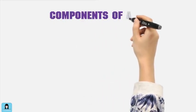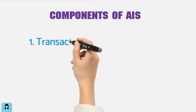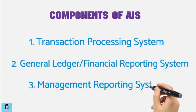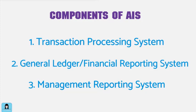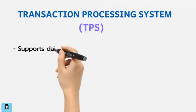Whether it is a manual or a computer-based system, the AIS is composed of three major components or subsystems: the Transaction Processing System (TPS), the General Ledger Financial Reporting System (GLFRS), and the Management Reporting System (MRS). The Transaction Processing System supports daily business operations with numerous reports, documents, and messages for users throughout the organization.